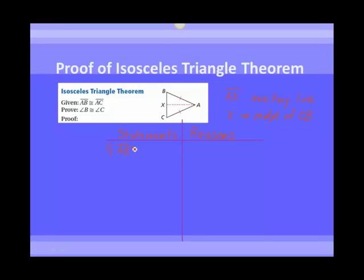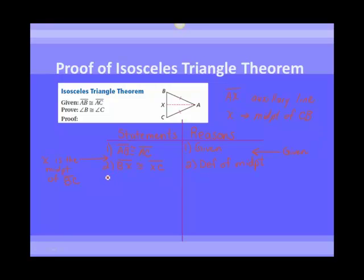So we have our statements and reasons. Statement one, given: AB is congruent to AC. We also have as given that X is the midpoint of segment BC. From that, we can say BX is congruent to XC by the definition of a midpoint. And then we can say that AX is congruent to itself by the reflexive property.